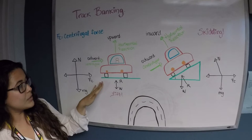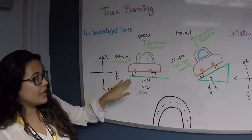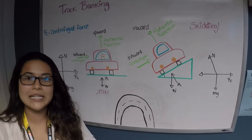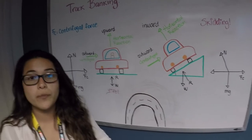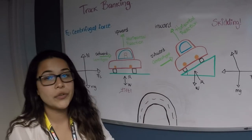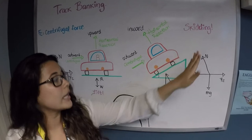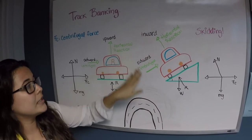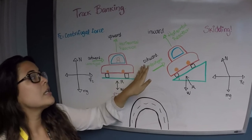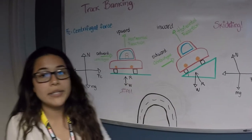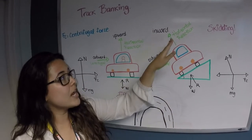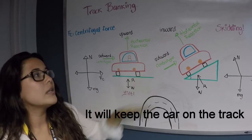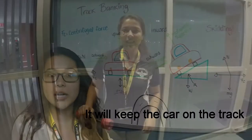This will cause the car to lift when turning. So STEM designers came up with the idea of banking, which refers to the inclination of the track. Now the horizontal reaction acts inward from the car and the centrifugal force still acts outward from the car. However, the horizontal reaction counteracts the centrifugal force, which will keep the car on the track.